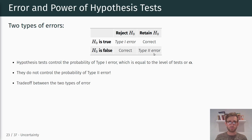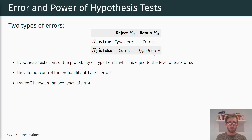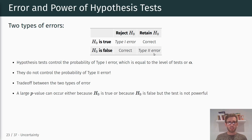The alpha level or significance level does not control the probability of a Type II error. There is essentially a trade-off between the two types of errors. Depending on our substantive question and the relative risks involved, we might be more concerned with one or the other. But when we talk about hypothesis testing and significance levels, what we quantify is the probability of a Type I error.